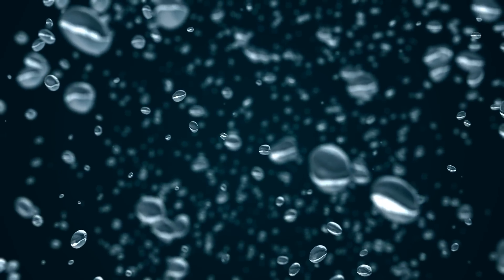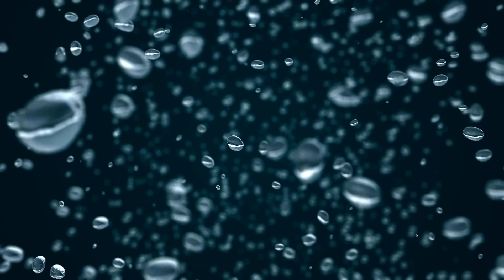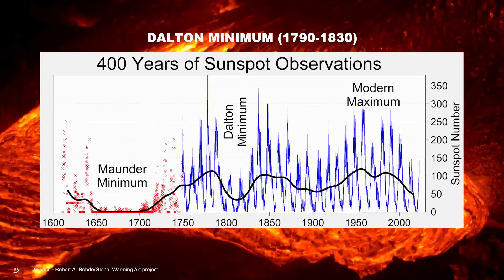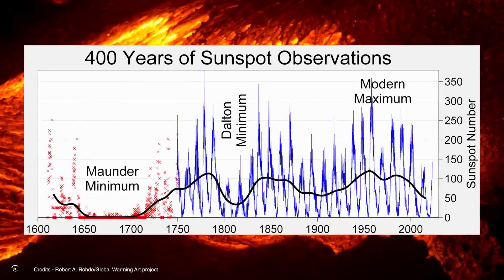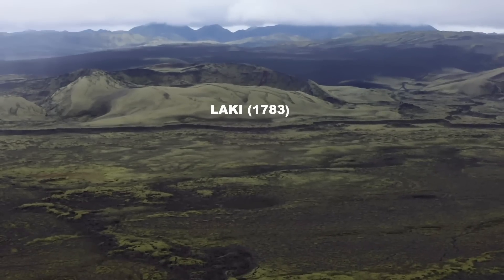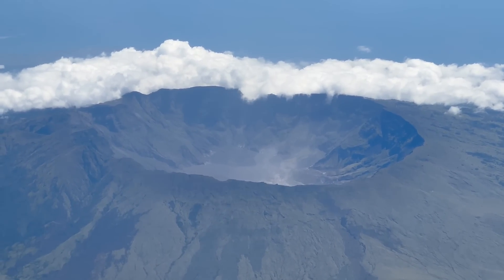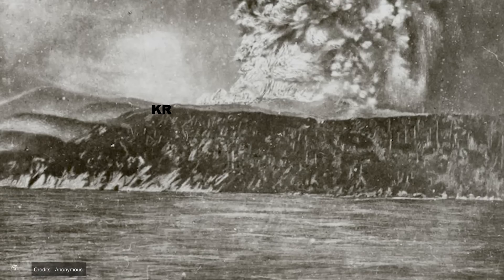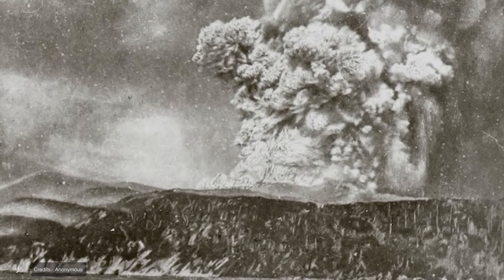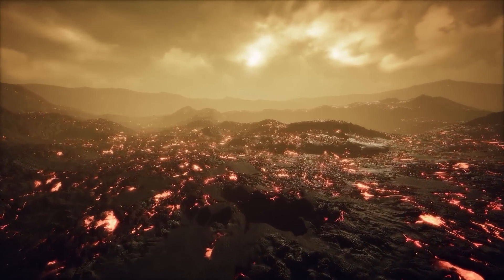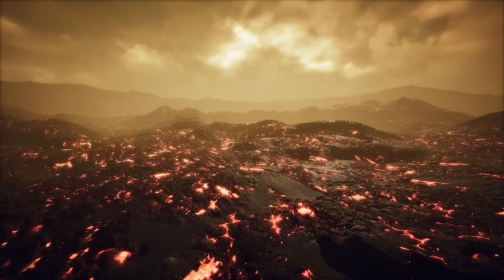In addition, eruptions can affect rainfall patterns and regional atmospheric circulation. Particles can serve as condensation nuclei for cloud formation, altering precipitation. This period of low solar activity and frequent volcanic eruptions — such as those of Laki and Tambora — was associated with global cooling and extreme weather conditions. The eruption of Krakatoa in Indonesia released vast amounts of ash and aerosols into the atmosphere, causing global cooling and spectacular sunsets for years.